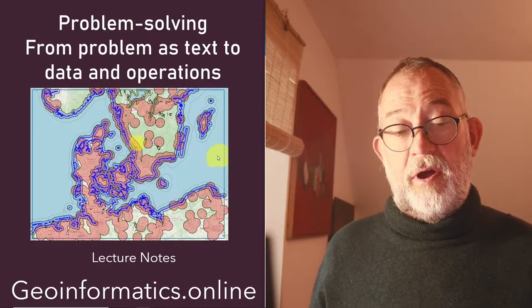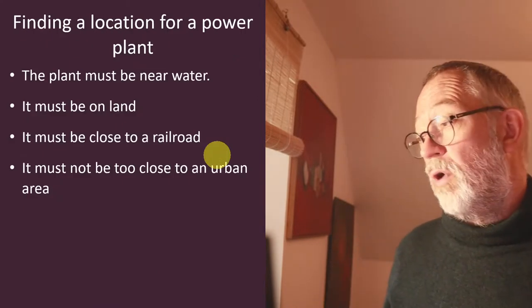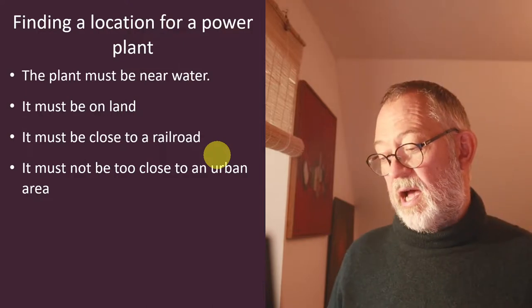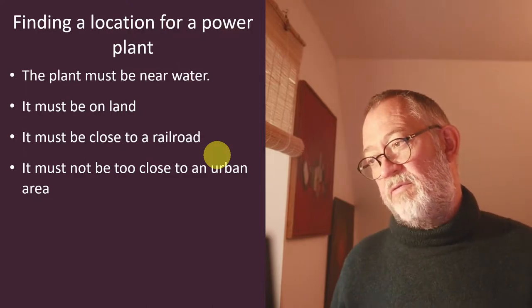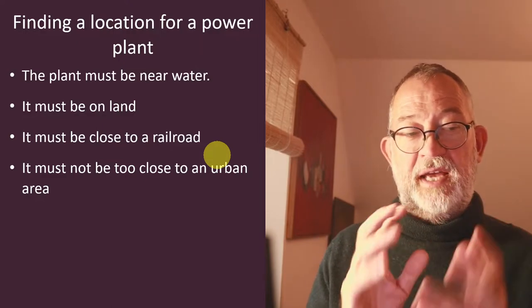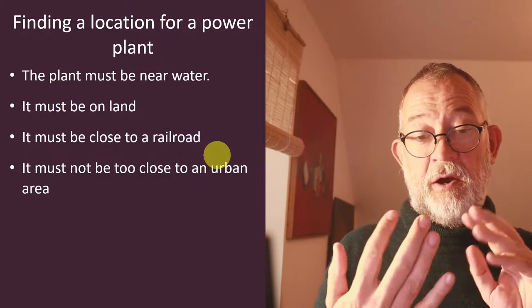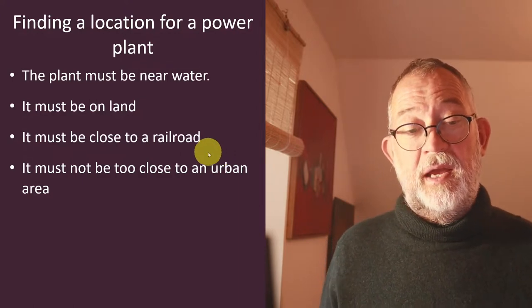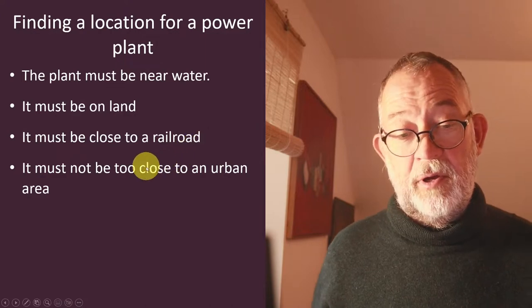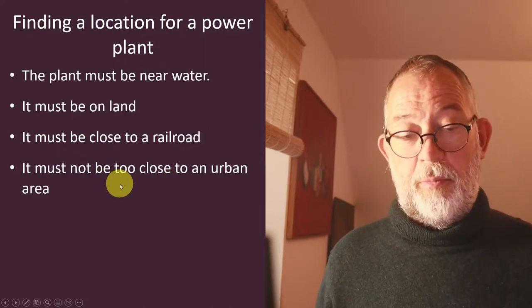So if we first of all look at an example of a text, we will have this fictive power plant where we say that the plant must be near water, it must be on land, it must be close to a railroad, and it must not be too close to urban areas.